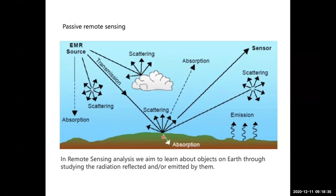In remote sensing analysis, we aim to learn about objects on Earth through studying the radiation reflected and/or emitted by them.